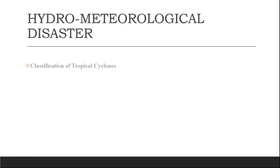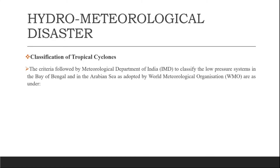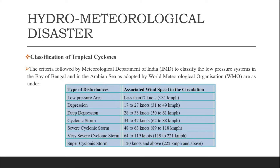Now for classification — the criteria followed by the India Meteorological Department (IMD) to classify low-pressure systems in the Bay of Bengal and the Arabian Sea, as adopted by the World Meteorological Organization (WMO). The classification table shows types of disturbances and associated wind speeds. For example, a low pressure area has wind speed less than 31 kilometers per hour, or less than 17 knots.